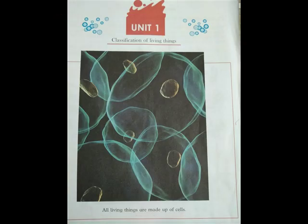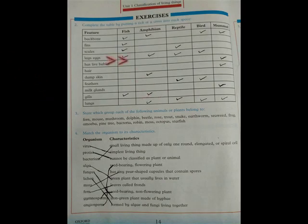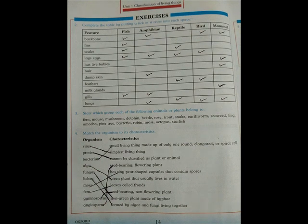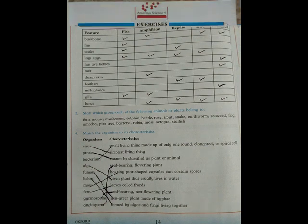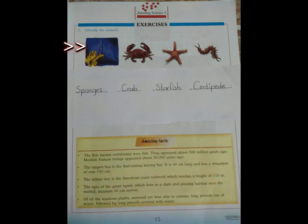You should already have solved the questions in your notebooks. You must also do spelling practice. Since unit number one has been completed, read it again carefully and solve the objective exercise of unit number one, which is given on pages 14 and 15, with pencils.